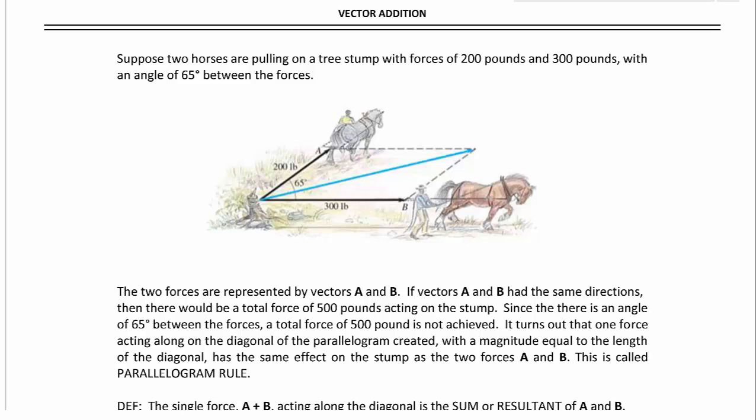The two forces are represented by vectors A and B. If vectors A and B had the same directions, then there would be a total force of 500 pounds acting on the stump. Say we just add the two forces together. But since there's an angle of 65 degrees between the forces, a total force of 500 pounds is not achieved.